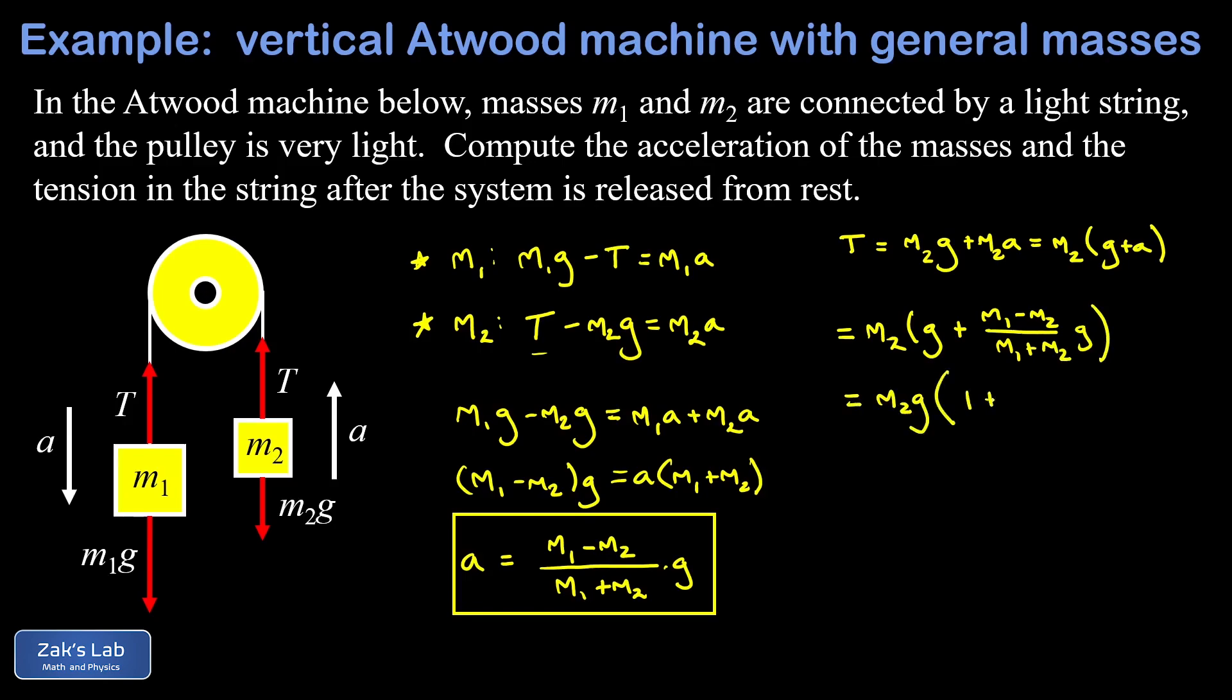We're going to clean this up so we need to get a common denominator here. We get that done by multiplying this one by m1 plus m2 over itself. So instead of a one we have an m1 plus m2 divided by itself, and then our original fraction over here m1 minus m2 over m1 plus m2.